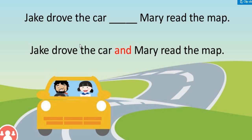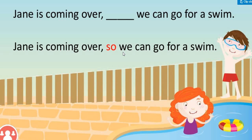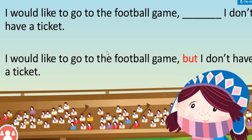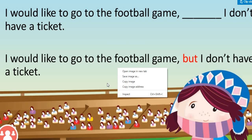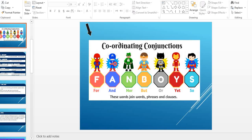My coordinating conjunctions are all found in the word FANBOYS — just memorize the word FANBOYS and you know the coordinating conjunctions. F for FOR, A for AND, N for NOR, B for BUT, O for OR, Y for YET, S for SO. I use coordinating conjunctions to connect two or more sentences together. I need to know when to use each one correctly.